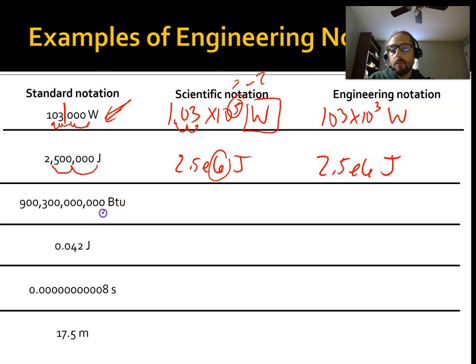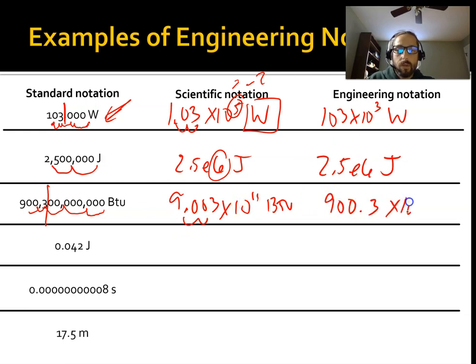And that's pretty much it. So we got, we'll try this number here. So 3, 6, 9, 10, 11. So 9.003, and remember, we want to keep everything up to that last non-zero number, times 10 to the 11th BTU. And this, we're going to subtract 2 to get to 9, which means we move over two, so 900.3 times 10 to the 9th BTU.